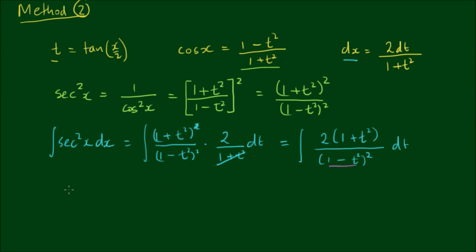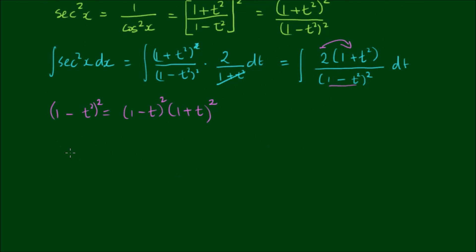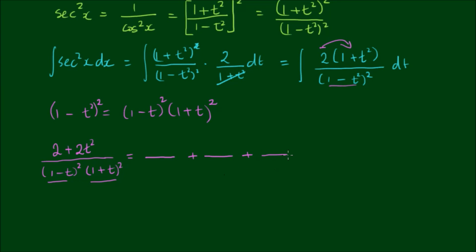The denominator (1 − t²) can be written as a difference of two squares: (1 − t)(1 + t). Squaring gives (1 − t)²(1 + t)² for the full denominator. Expanding, the fraction becomes (2 + 2t²) / [(1 − t²)(1 + t²)]. We must now break this into partial fractions. There are two repeated factors — (1 − t) repeated and (1 + t) repeated — giving a total of four partial fractions with unknown numerators A, B, C, and D.